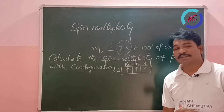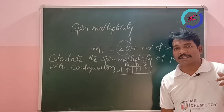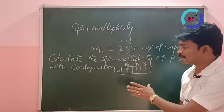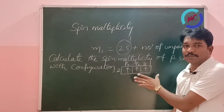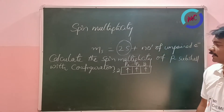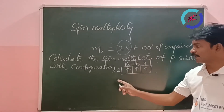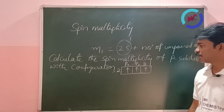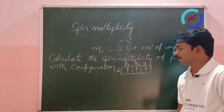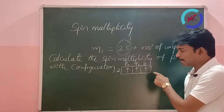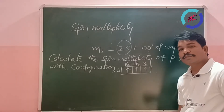Sometimes the question is asked indirectly, sometimes directly by giving the configuration using the box method. For example: calculate the spin multiplicity of the p subshell with configuration 2p³. Using the box method, there are 3 unpaired electrons.